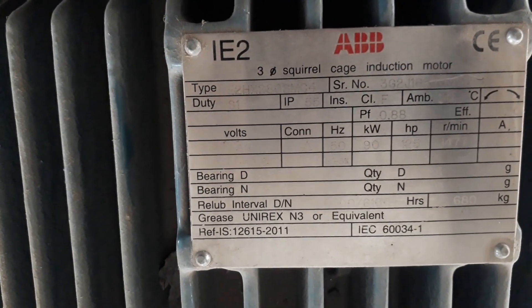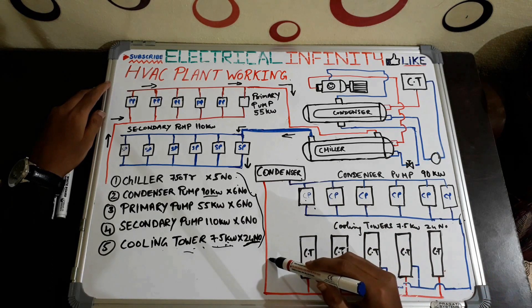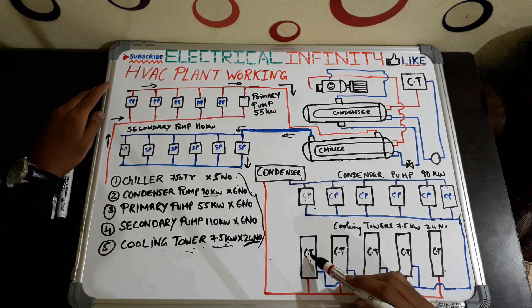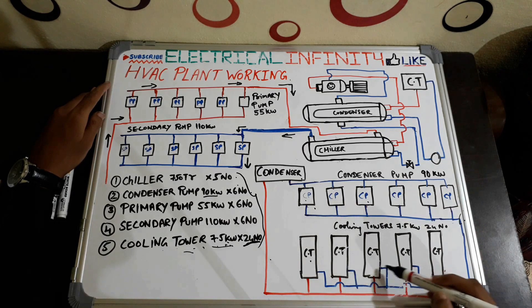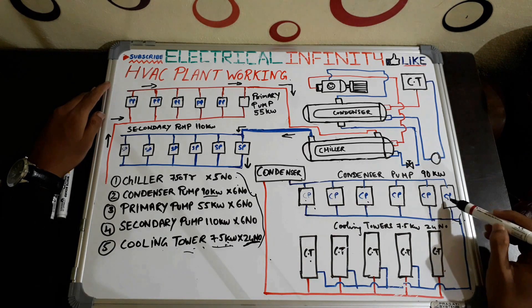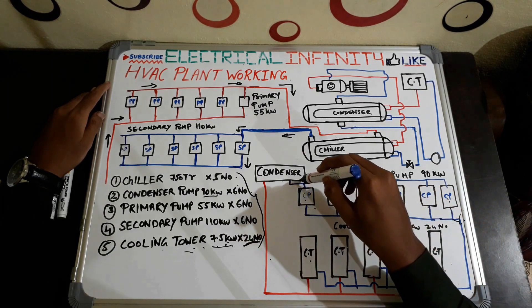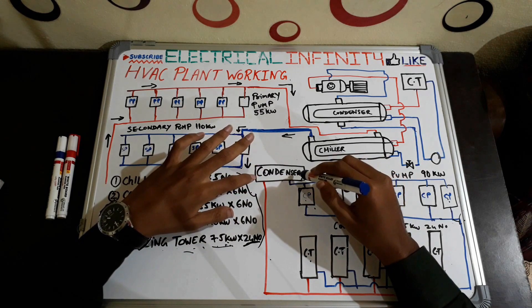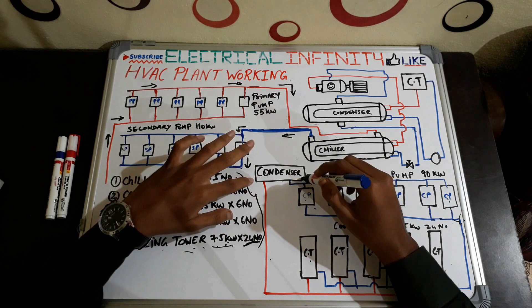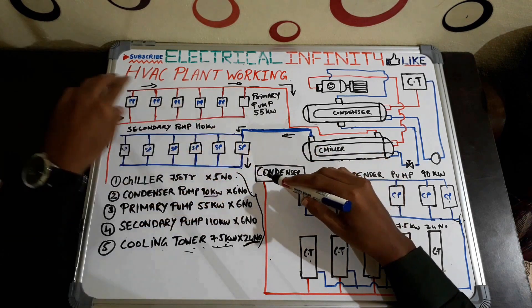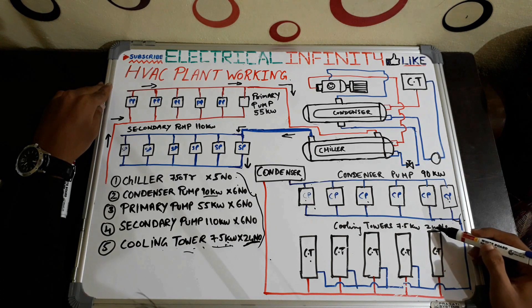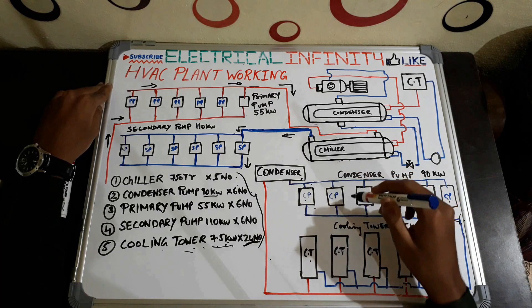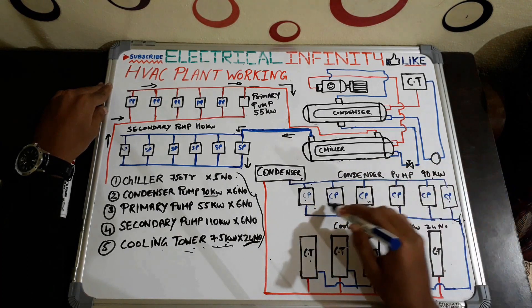Here you can see the condenser, condenser pump, and cooling tower. Red lines mean hot water and blue lines mean cool water. The cool water from the cooling towers is pumped into the condenser via the condenser pump. Heat exchange takes place between the cool water and the condenser refrigerant — the water gets heated up and the refrigerant gets cooled. The heated water is then transferred back to the cooling tower.